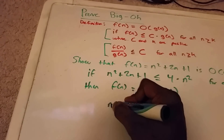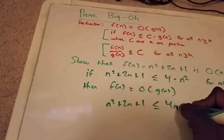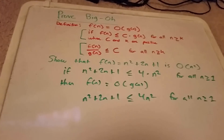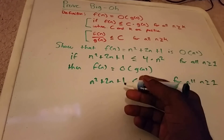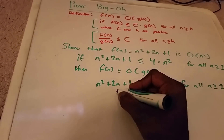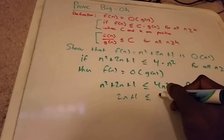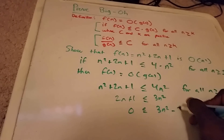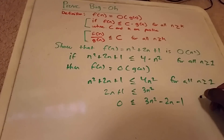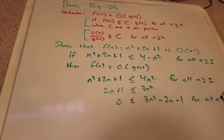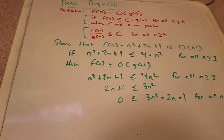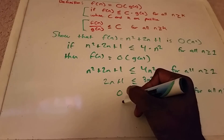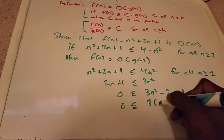So let's prove this. We need n squared plus 2n plus 1 less than or equal to 4 times n squared, for all n greater than or equal to 1. Subtracting from both sides, we get 2n plus 1 less than or equal to 3n squared, and so 0 less than or equal to 3n squared minus 2n minus 1. The lowest value n can be is 1, so let's plug in 1: we get 0 less than or equal to 0, which is true.